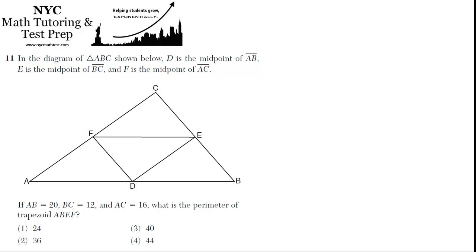If AB is 20, BC is 12, and AC is 16, what's the perimeter of trapezoid ABEF?